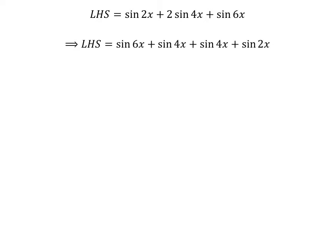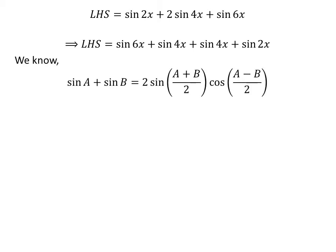Here we have rearranged the left hand side of the equation. We know the famous trigonometry identity: sine of a plus sine of b is equal to 2 times sine of half of (a plus b) times cosine of half of (a minus b). The proof of this identity is given in the video appearing in the upper right corner, and the link is also given in the description section.